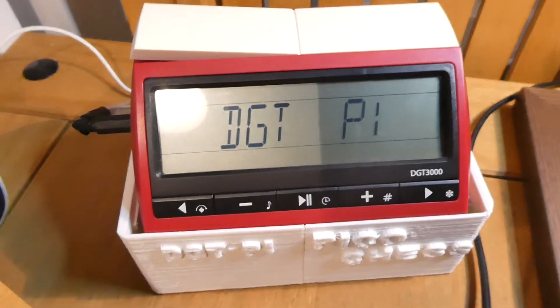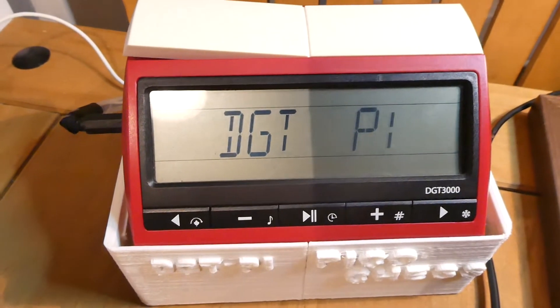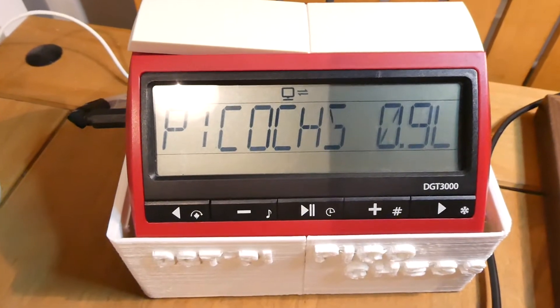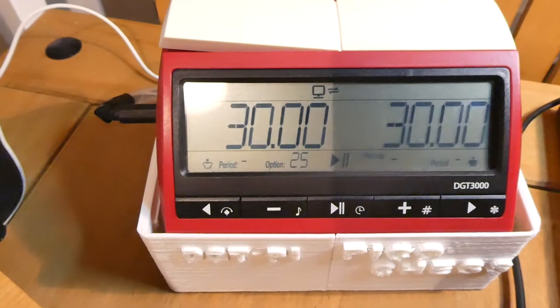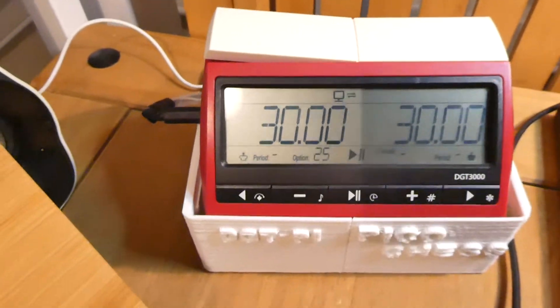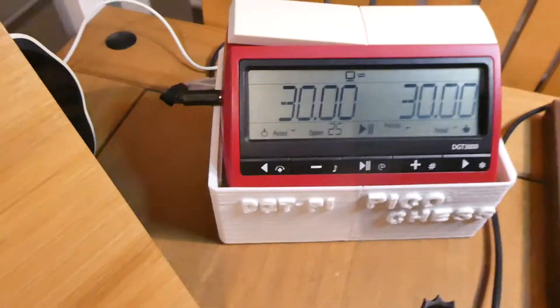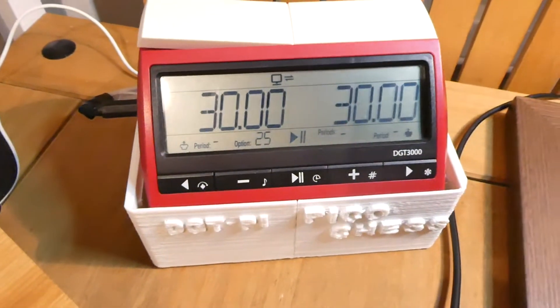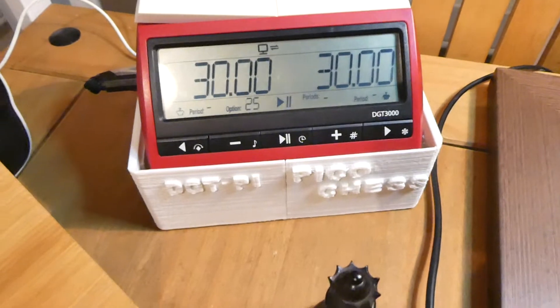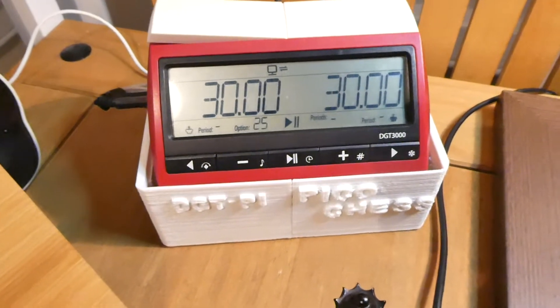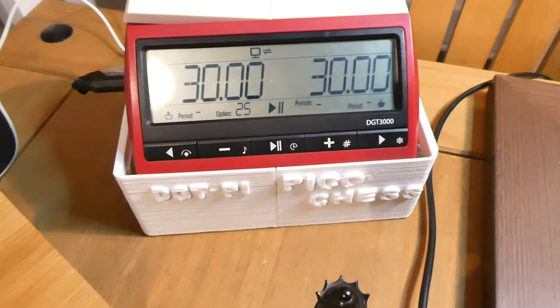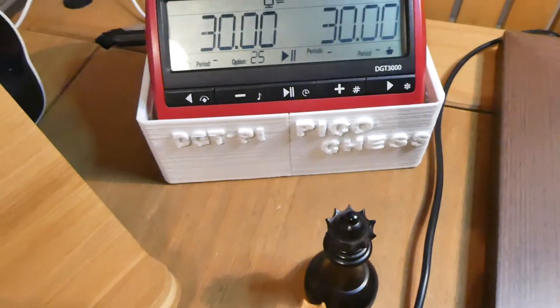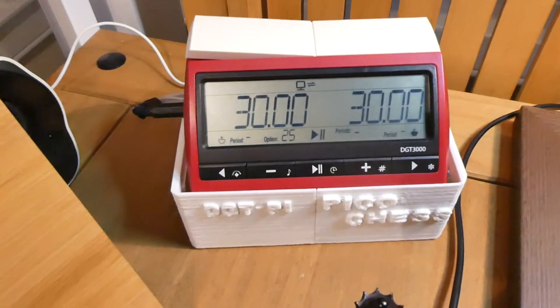So that's the DGT Pi running version 9 point something I think. PicoChess. There we go. So that's operational now. Speakers there. Does talk, does shout out the moves. So it's quite good for even partially sighted and blind people because it does shout out the moves.